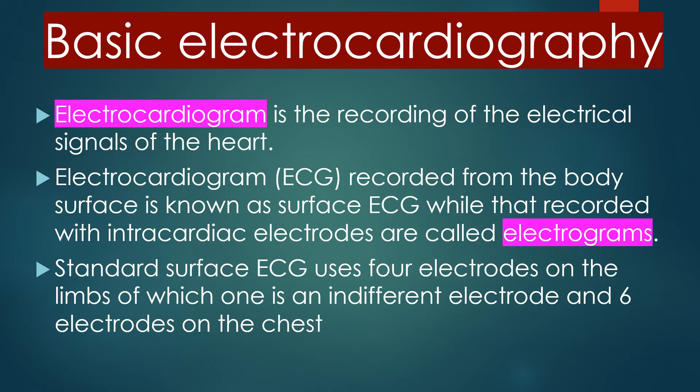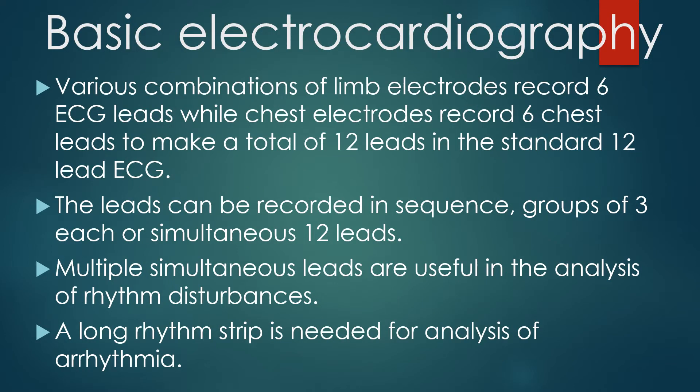Electrocardiogram is the recording of the electrical signals of the heart. ECG recorded from the body surface is known as surface ECG, while that recorded with intracardiac electrodes are called electrograms. Standard surface ECG uses 4 electrodes on the limbs, of which one is an indifferent electrode, and 6 electrodes on the chest. Various combinations of limb electrodes record 6 ECG leads, while chest electrodes record 6 chest leads, making a total of 12 leads in the standard 12-lead ECG.